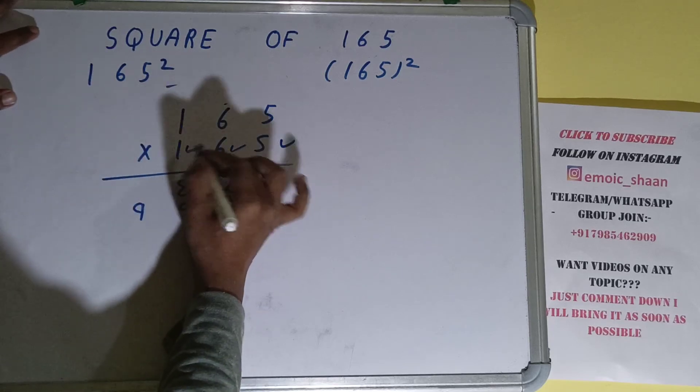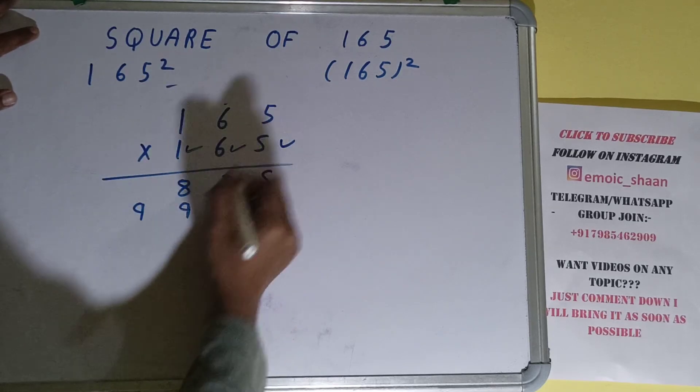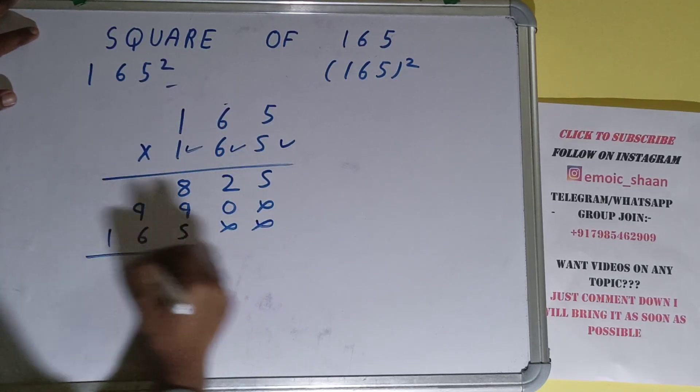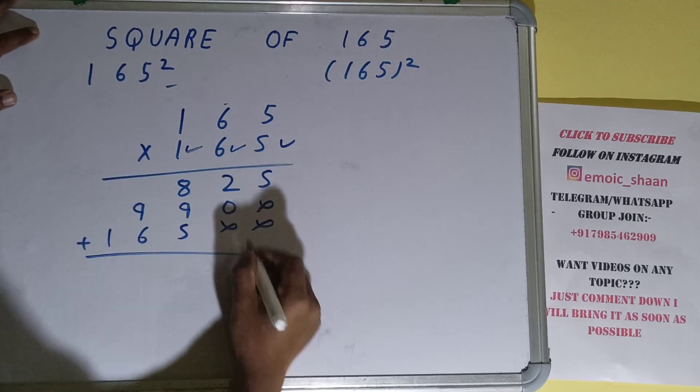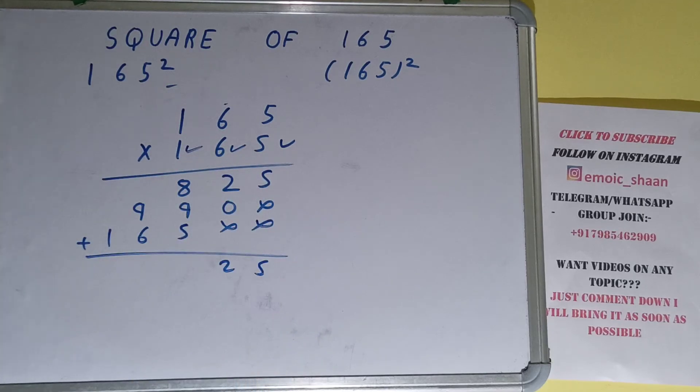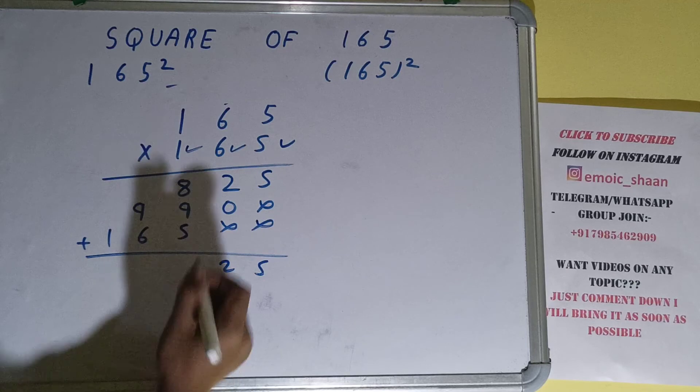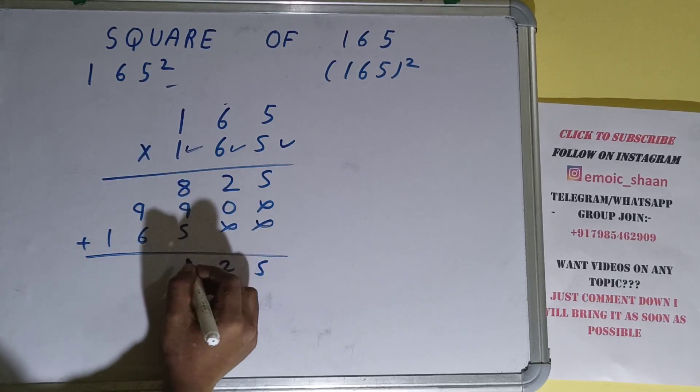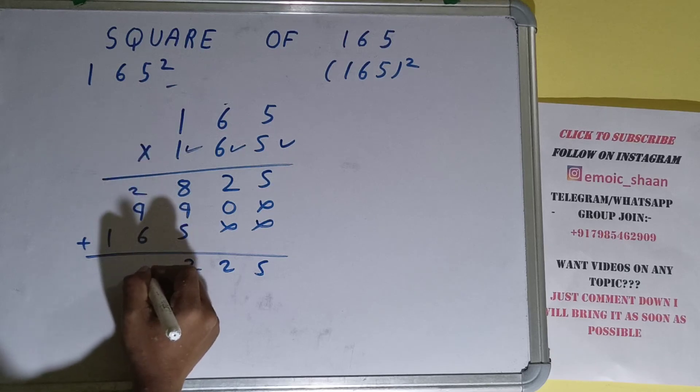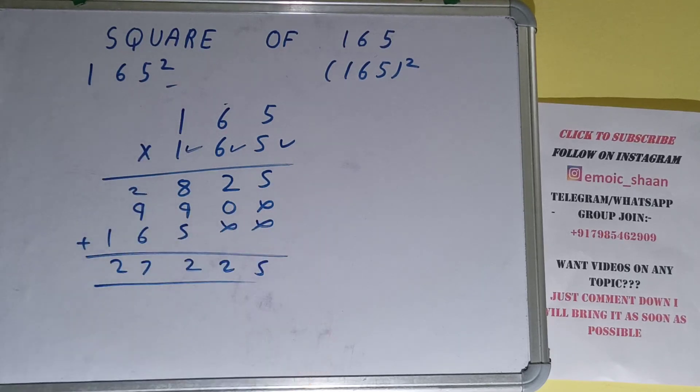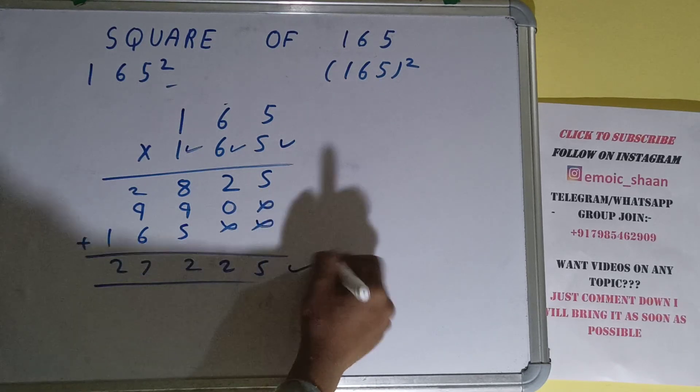Now the last one: 1 times 5 is 5, 1 times 6 is 6, 1 times 1 is 1. Just add them all: 5, 2, 9 plus 8 is 17 plus 5 is 22, 7, 2. The answer will be twenty-seven thousand two hundred and twenty-five. That will be the square of the number 165.